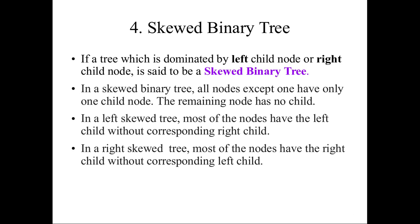Next is the skewed binary tree. In a skewed binary tree, either the left child or the right child is dominant — it is skewed only to the left side or only to the right side. All nodes except one have only one child, and the remaining node has no child. This is called a skewed binary tree.